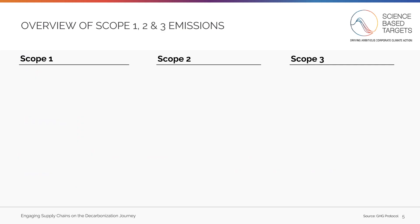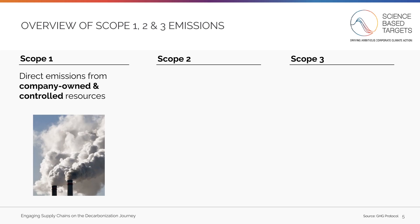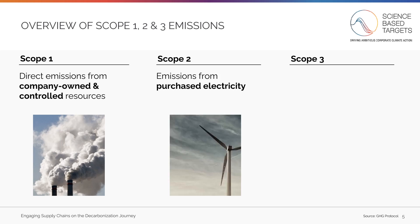As a reminder, emissions are categorized under three scopes: Scope 1, Scope 2, and Scope 3. Scope 1 are direct emissions from your company-owned or controlled resources — for example, emissions from your factory operations or company-owned vehicles. Scope 2 covers emissions from the production of electricity purchased by a company — for example, emissions from lighting and cooling your factory or office building.